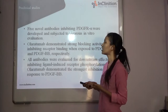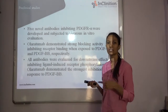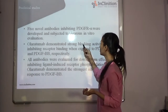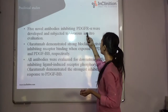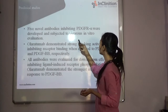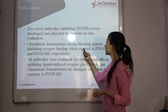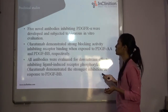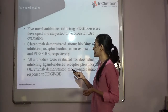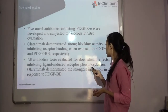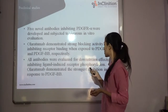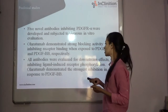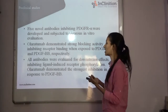In pre-clinical studies, there were 5 novel antibodies along with Olaratumab which were evaluated, used for inhibiting PDGFR-alpha and were rigorous in in-vitro evaluation. Olaratumab demonstrated strong blocking activity, inhibiting receptor binding when exposed to PDGF-AA and PDGF-BB respectively. All antibodies were evaluated for downstream effects inhibiting ligand-induced receptor phosphorylation, and Olaratumab showed the strongest inhibition in response to PDGF-BB. Hence, it was taken for further studies.